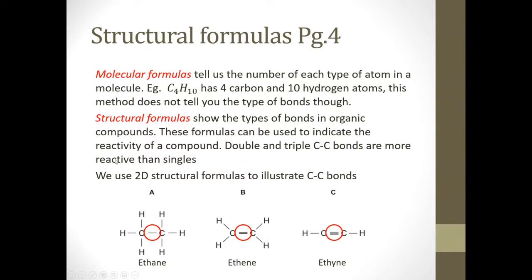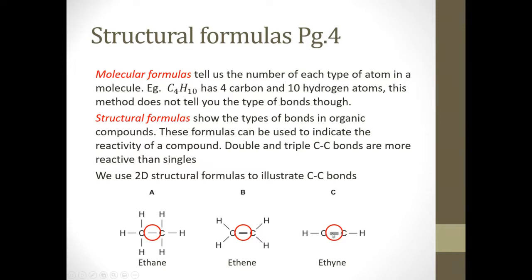Double and triple bonds are more reactive than single bonds — that's an important statement to remember. Ethane has a single bond, meaning all its valence electrons are occupied and it can't do anything more. Ethene, with the double bond, if one of the two bonds were broken, the carbons would still be connected but there would be an option for another hydrogen — an indicator that a reaction can happen. With a triple bond, the same idea applies: one bond holds the carbons together, and the other two could theoretically break and bond to something else.